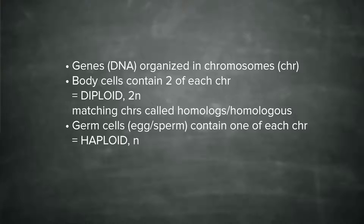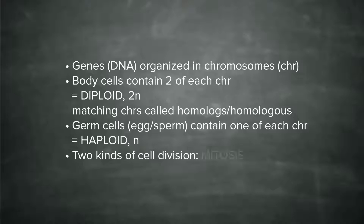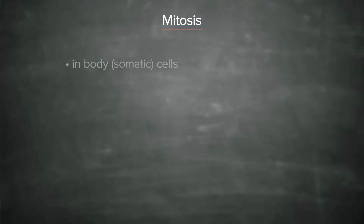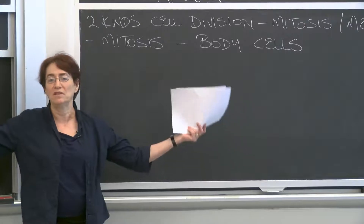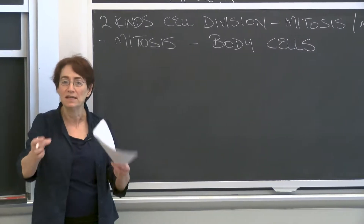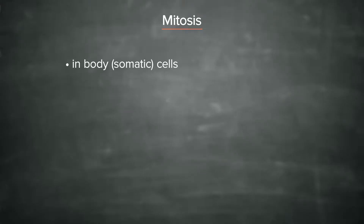That is the background you need to know before we talk about the next details of cell division. There are two kinds of cell division: something called mitosis and something called meiosis. They are somewhat different from one another, although they're both forms of cell division. Let's start with mitosis, which occurs in body cells. Even as we're speaking, there are thousands and millions of your cells undergoing cell division right now — hundreds of thousands of cell divisions per second in our bodies. The outcome of mitosis is two cells that are identical to the parent cell. These are always called daughter cells.